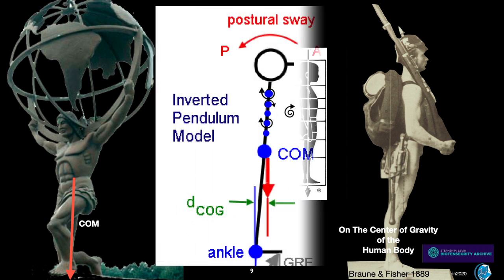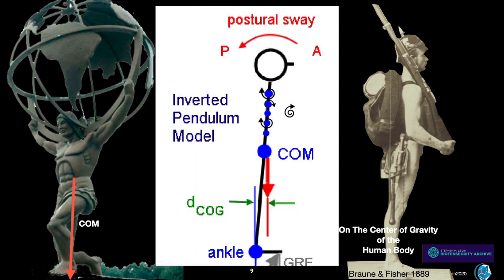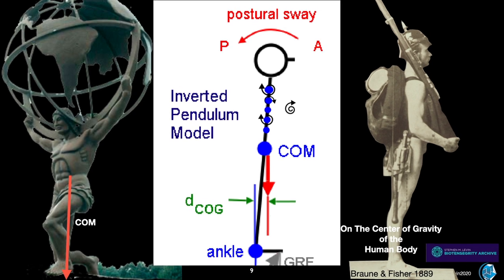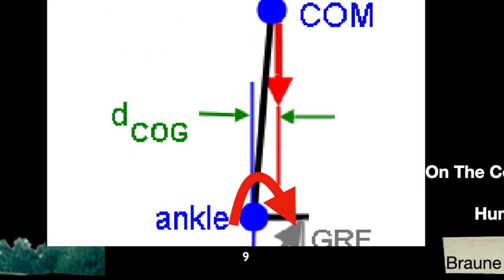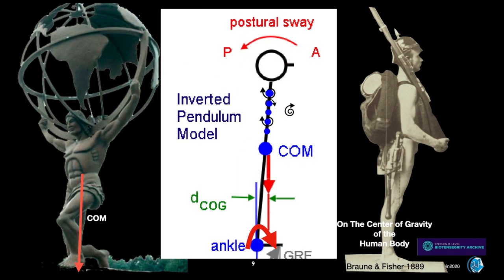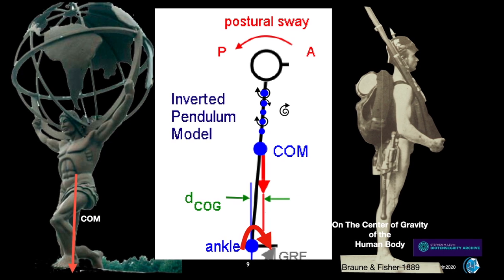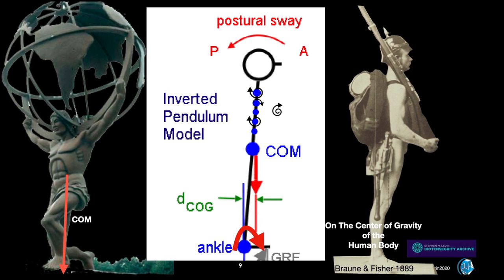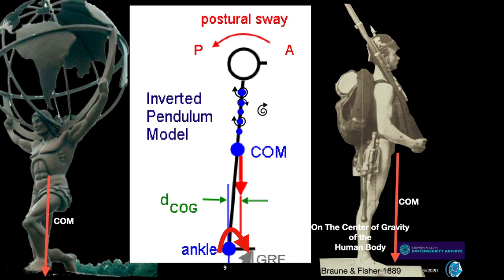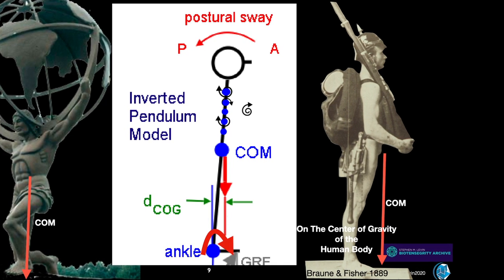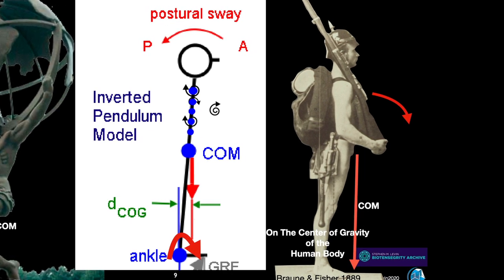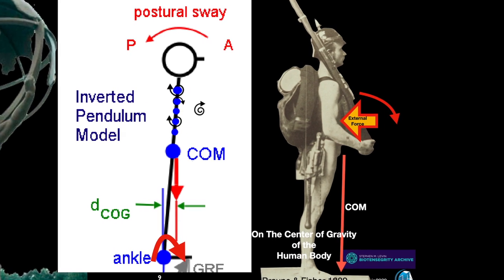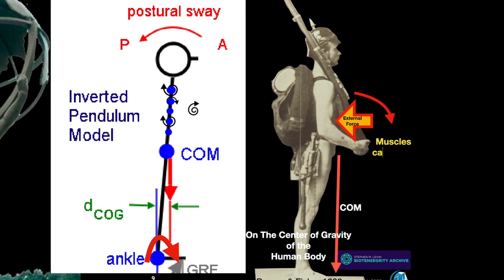The currently accepted model is the inverted pendulum model, but we have a problem here because the center of mass doesn't fall through the center of the ankle, but rather anterior to it, creating a torque at the ankle joint itself. This could be troublesome, but it's even more troublesome in the 1889 soldier, where the center of gravity falls anterior to his toes, which would make him tilt over and fall on his face. This would require an external force to push him back, as the muscles can't do it, as they're an internal force.